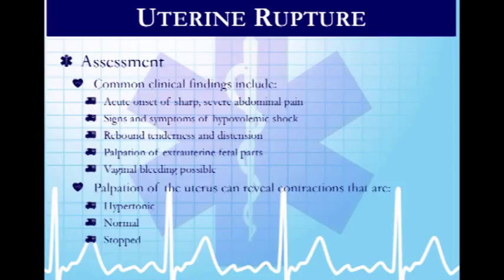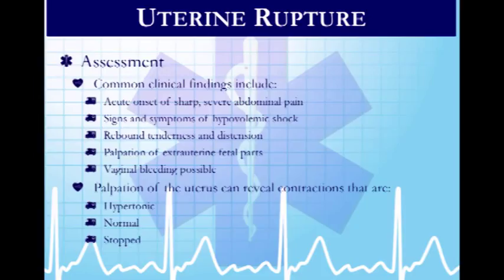Uterine rupture can occur in pregnant trauma patients. The uterus, normally pliant, bursts due to blunt trauma or a pre-existing weak spot from prior surgery. These women experience sharp sudden onset of pain and hypovolemic shock from internal bleeding. On abdominal assessment there will be rebound tenderness from peritoneal bleeding. Strangely, you can actually feel baby parts — an arm, head, or foot — because the uterus is no longer enveloping the baby.